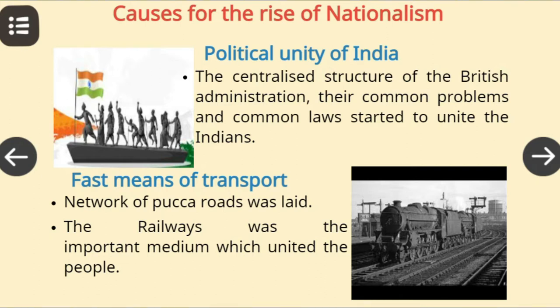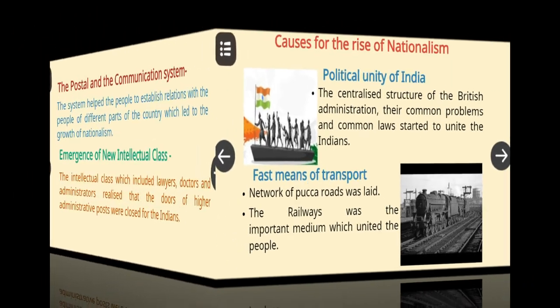The next cause was fast means of transport. Though the fast means of transport were developed for the interests of the British administration, but somewhere it helped the Indians to unite. A network of pakka roads and the railways connected one state to another and the villages to the cities.